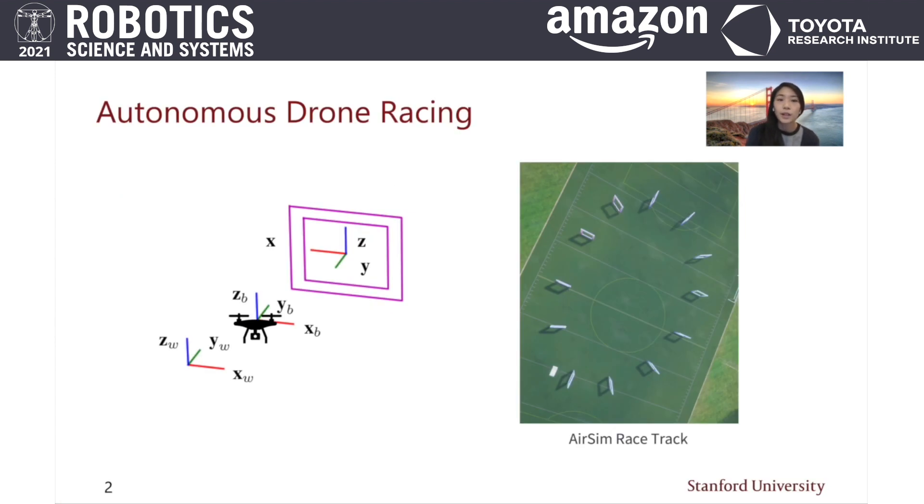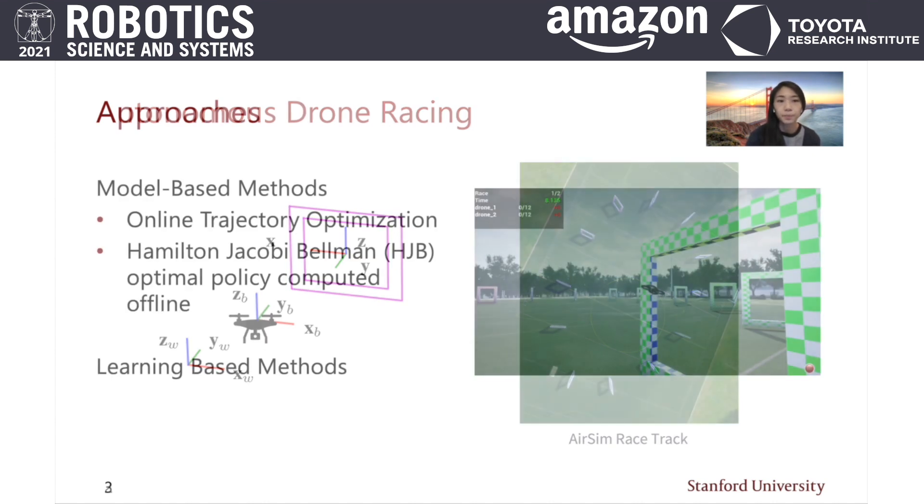In this work, we focus on an autonomous drone racing setting where a single drone races through a series of gates as quickly as possible. We assume that the pose of each oncoming gate is known after passing through the previous gate. On the right is a racetrack we use to simulate our approach.